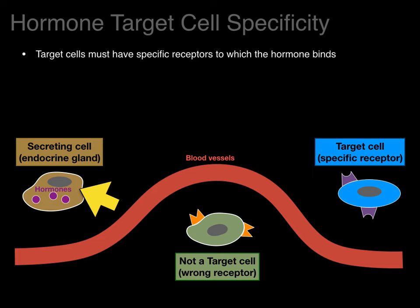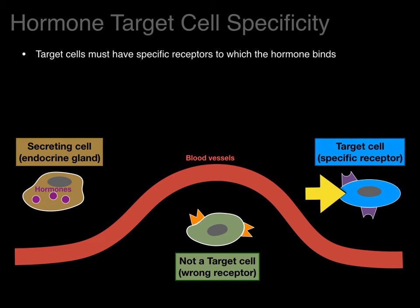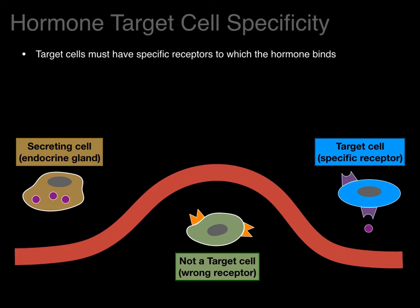An endocrine gland produces hormones that go inside blood vessels, and we have two different target cells — one with a receptor that's not specific for that hormone, and another that has a specific receptor. That endocrine gland secretes its hormone into the bloodstream, which flows through the blood and diffuses into the interstitial space, but if that hormone doesn't fit that lock, it goes off and nothing happens in that target cell. When a hormone flows and binds to a specific receptor, it will now affect that cell to do something.